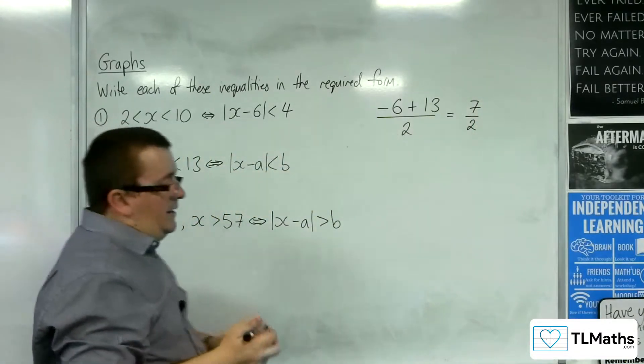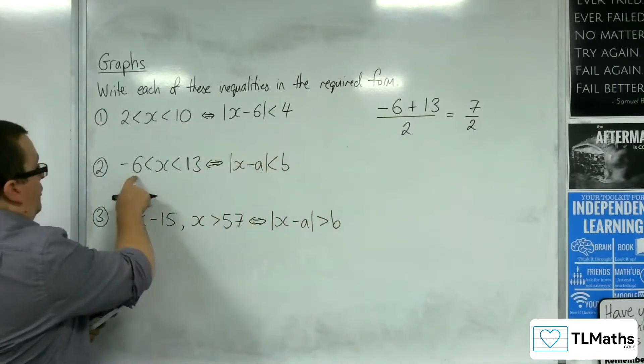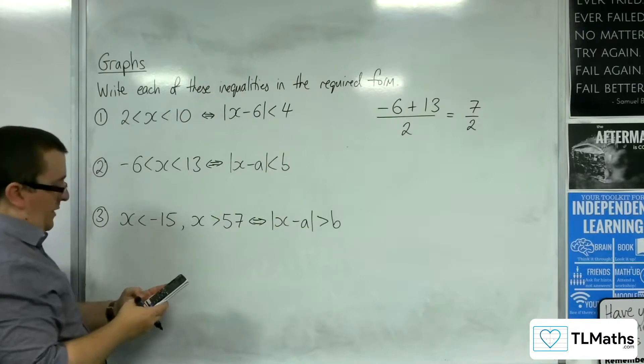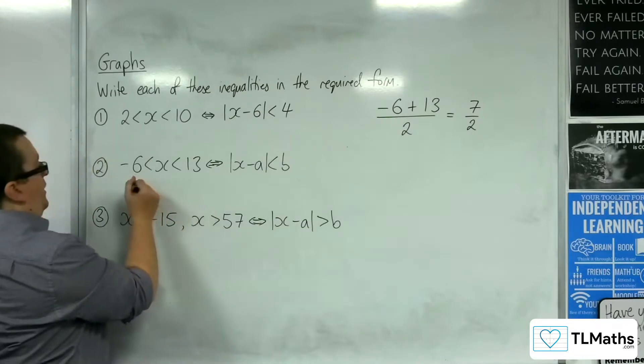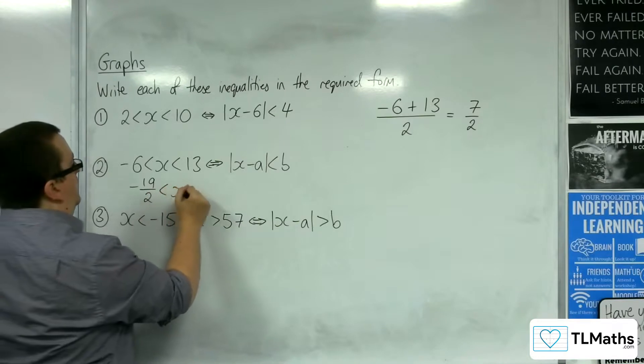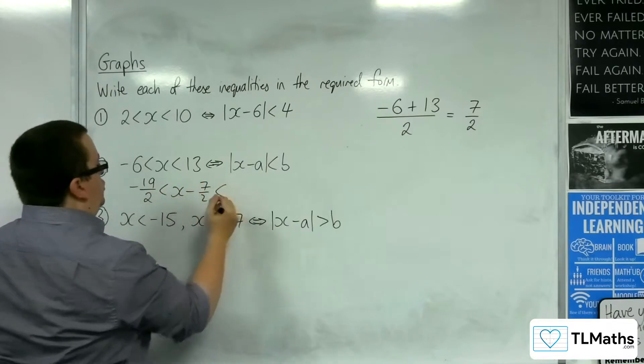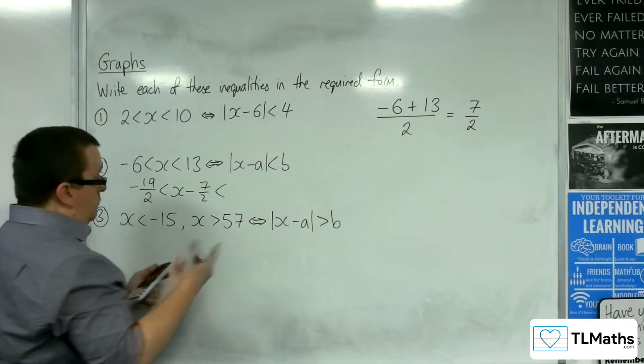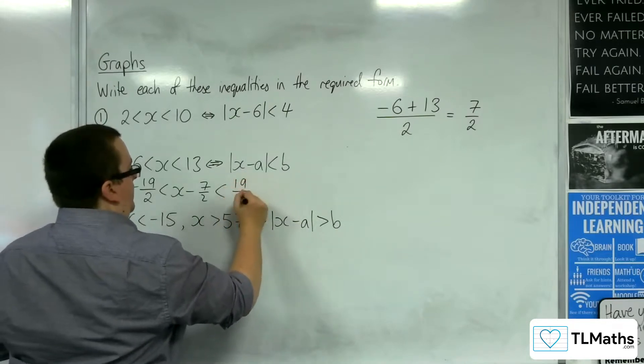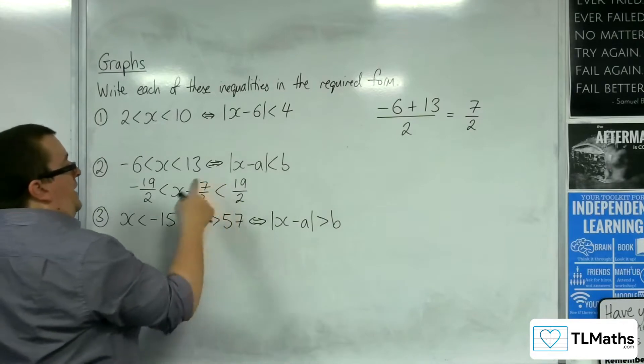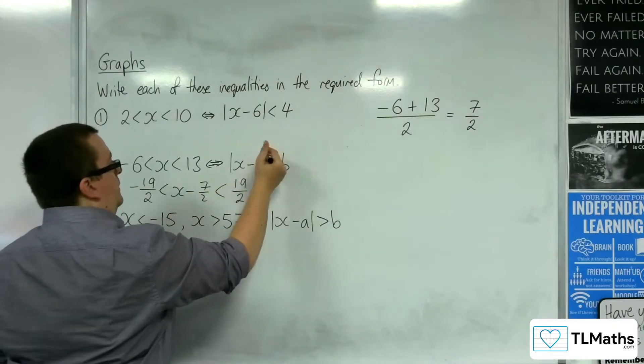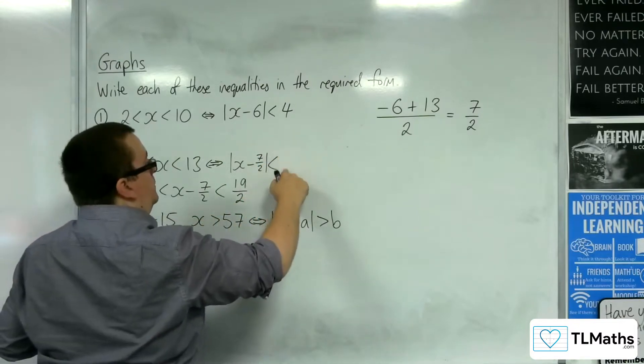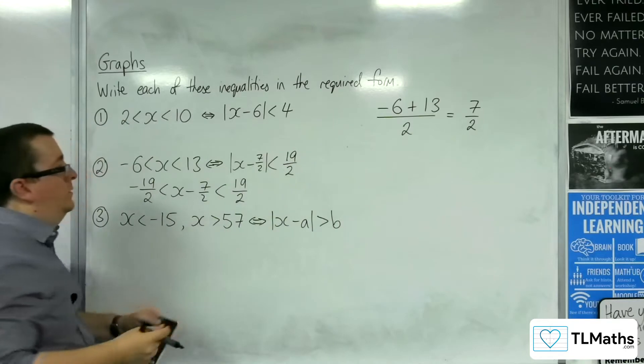We want to take 7 halves from each of these terms. We've got minus 6 take away 7 halves is minus 19 halves. We should get 13 take away 7 halves as 19 halves, which it is. So that means that the A here is the 7 halves, and the B is the 19 halves.